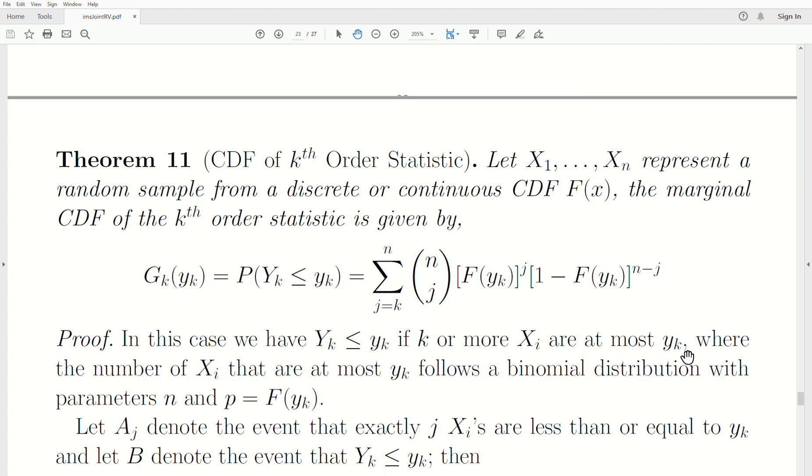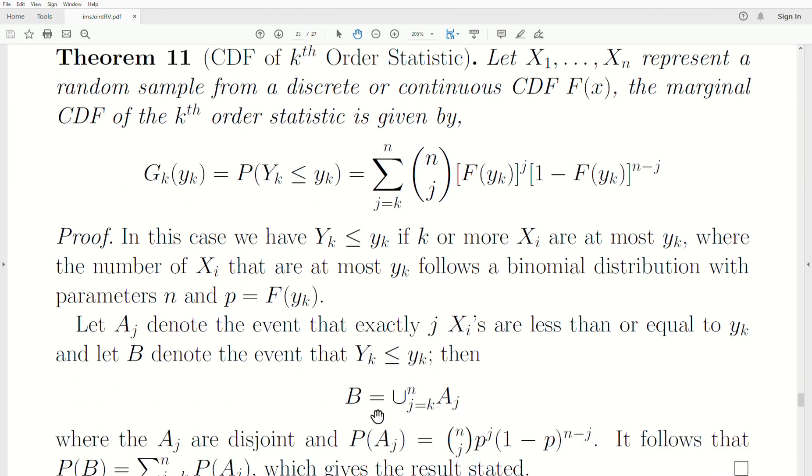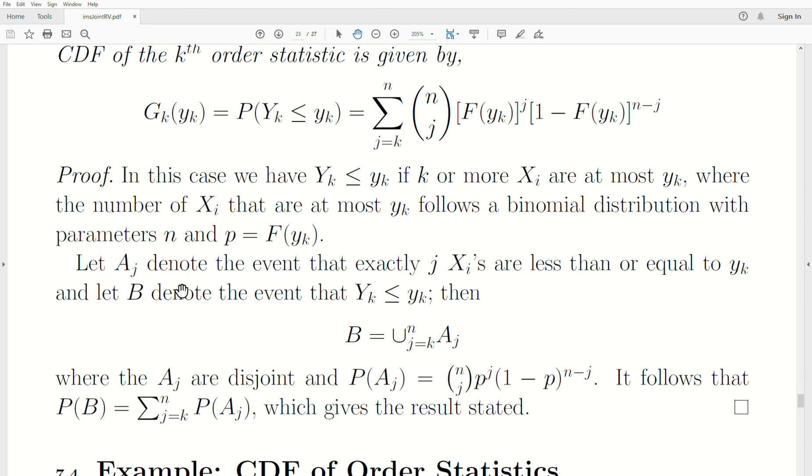So if k or more of the x's are at most yk, where the number Xi that are at most yk follows a binomial distribution. If we have a sample size n, how many of them are below little yk? That's a binomial distribution with sample size n, and p is probability less than yk, which is capital F, the CDF. Let Aj denote the event that exactly j Xi's are less than or equal to this value, little yk. Let B denote the event that the kth order statistic is less than that value, little yk. Then the event B is the union of these Aj's from k to n. The Aj's are disjoint, and the probability of a particular Aj is a binomial distribution. So the probability of the event B is the sum of these disjoint events from k to n, and that's what this result gives.